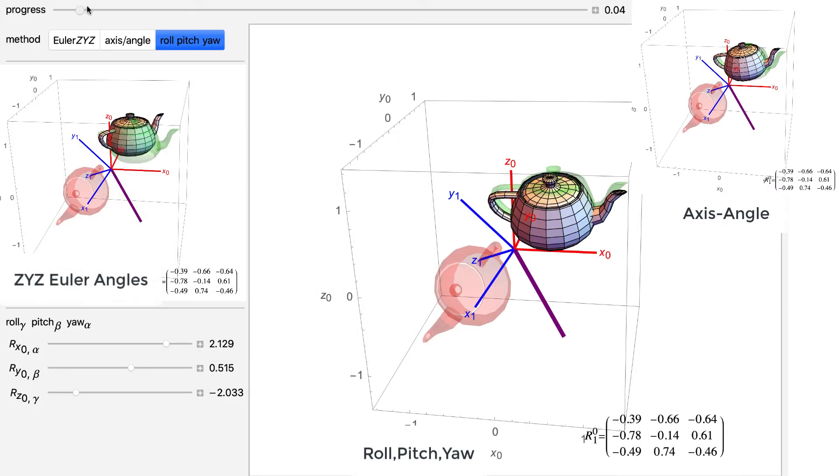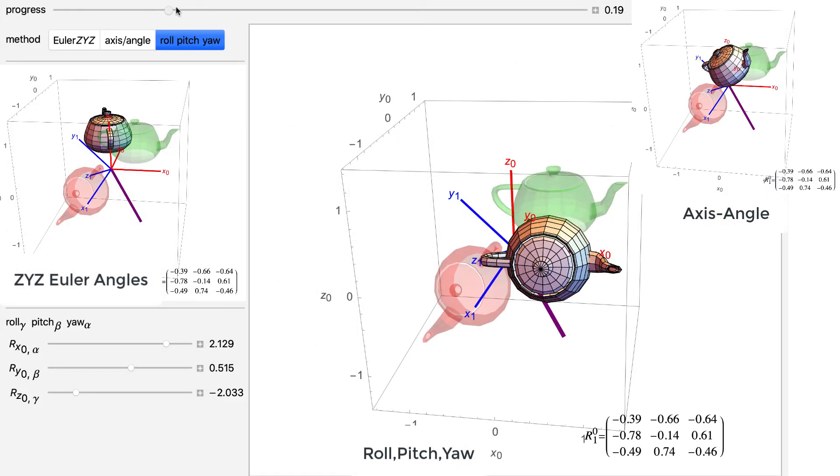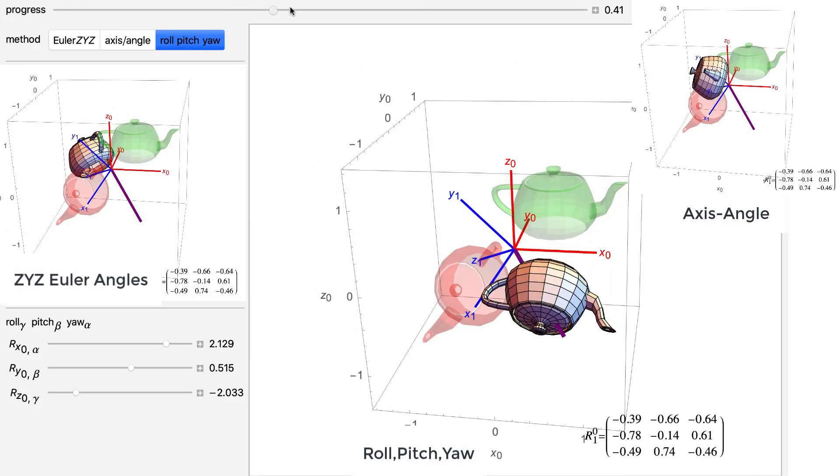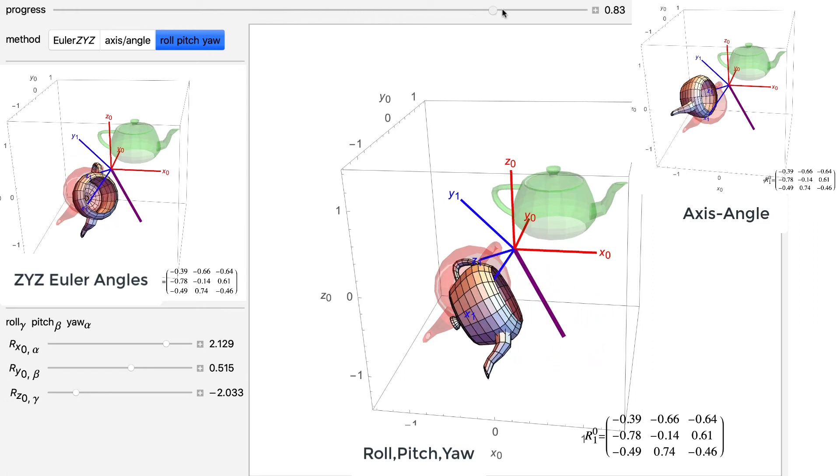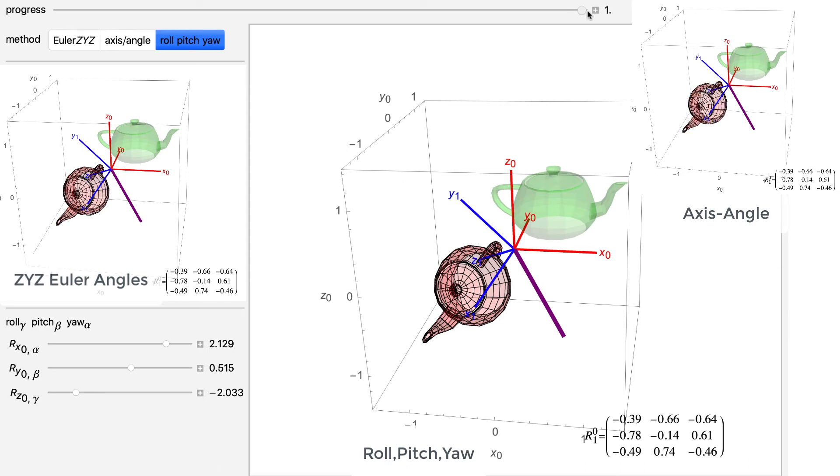Our final parameterization uses roll, pitch, and yaw angles, denoted as alpha, beta, and gamma. The order of rotation in this demonstration is around the fixed coordinate frame x, y, z-axis.